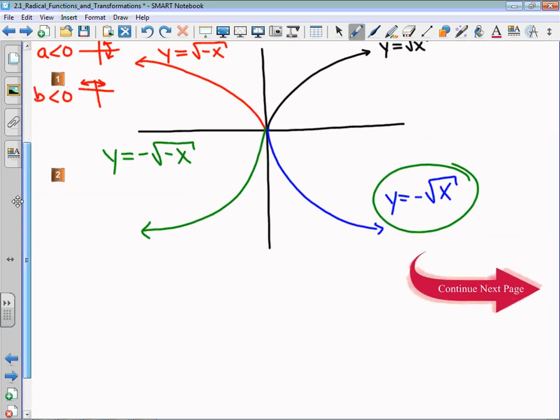And if I were to do that, multiplying that blue function's x value by negative 1 would give me also y equals the negative square root of negative x.